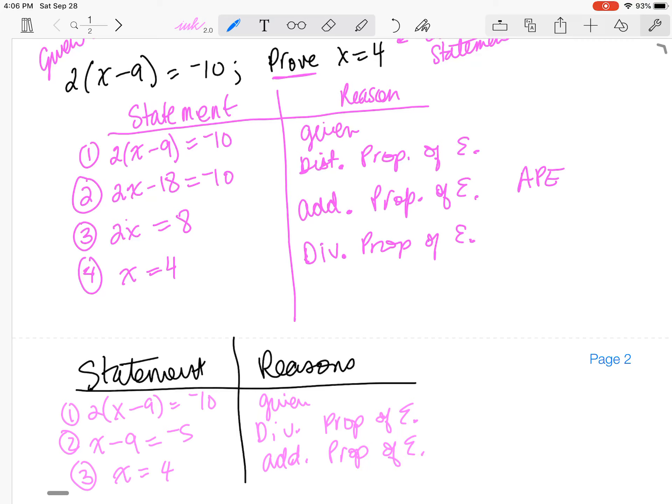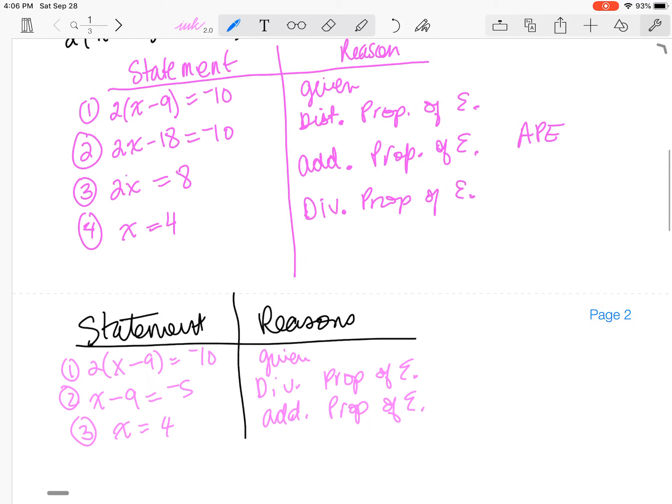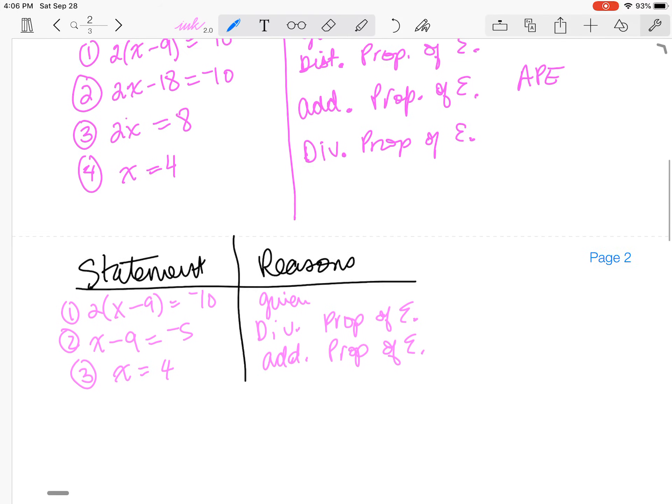And then step three would be x is equal to 4. And that would be the addition property of equality. So that way, actually that method would have given me a shorter step. I would have been able to prove my reasoning in even less steps than I did in the first proof. Either one of those proofs would be completely and utterly valid.